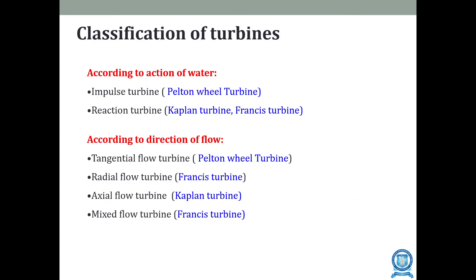The classification of turbines can be done in several ways. First, according to the action of water: we have impulse turbines such as the Pelton wheel, and reaction turbines such as the Kaplan turbine and Francis turbine. Second, according to the direction of flow: tangential flow, radial flow, axial flow, and mixed flow turbines.